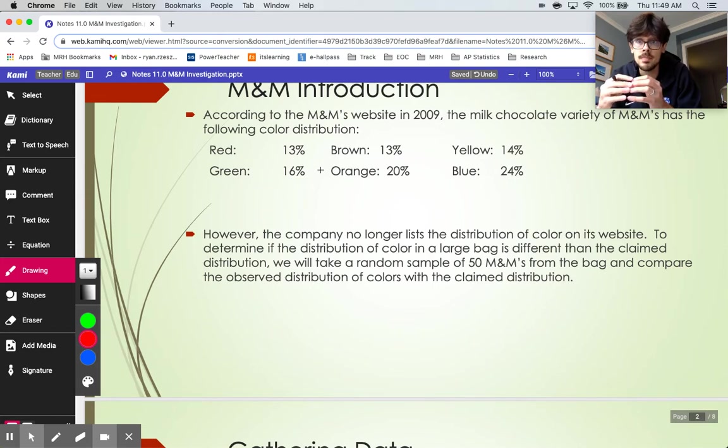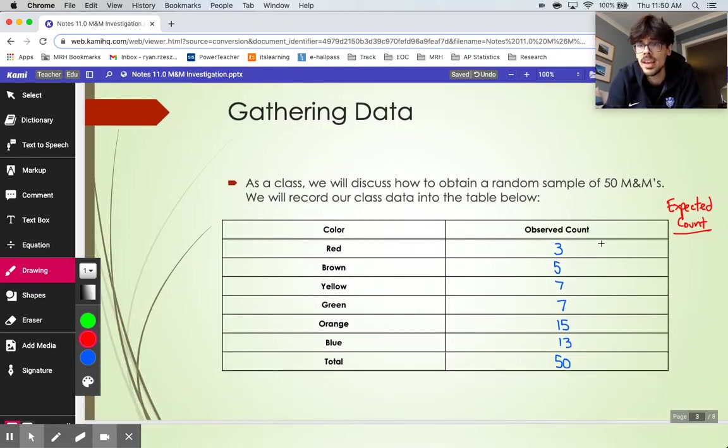Expected counts are going to be based on the percentages in the original problem. There were supposed to be 13% of the candies that are red. Well, 13% of 50 ends up being 6.5. Obviously, you can't have 6.5 red candies out of 50. That's not possible to have a decimal there. We're still going to leave it as a decimal, though, when we actually do these. So we got three reds. We were supposed to see 6.5 reds. So clearly there's a discrepancy in what was going on with red. Brown was also 13%. So that means we would also expect to see 6.5 browns. We were a little low on brown as well. Not as bad as we were with red, but we were off by a bit there.